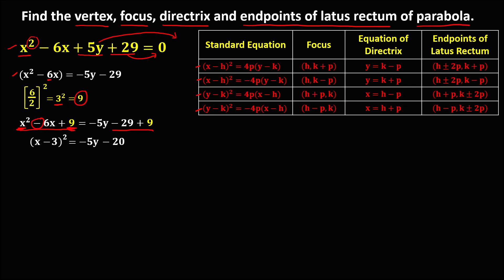Take note that in the standard equation of a parabola, the variable on the right side has no numerical coefficient. Therefore, this number on y — we need to factor out negative 5. So we put negative 5 outside, leaving y. Then for the negative 20, we divide by negative 5: negative 20 divided by negative 5 gives positive 4. So this is now the standard equation for this parabola.